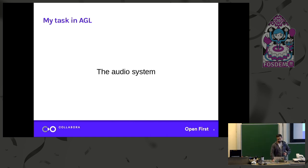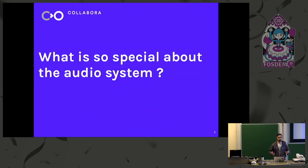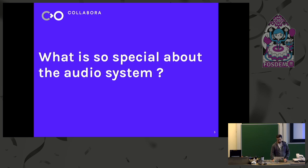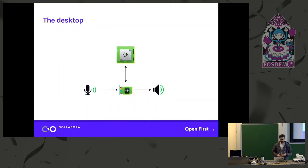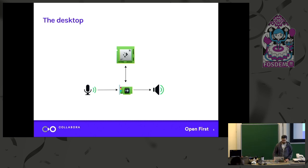Now, the immediate question you might have is what's so special about the audio system? We've had audio systems for years on Linux. The driver layer works, ALSA works. We have PulseAudio on top that works really well for the desktop. But yeah, what's missing? To explain that, I need to explain how the hardware looks, because that's the difference. On a desktop, we're used to having a single CPU and a single audio card. You choose one audio card, you have your speakers and microphone connected there, and PulseAudio can manage this really well.